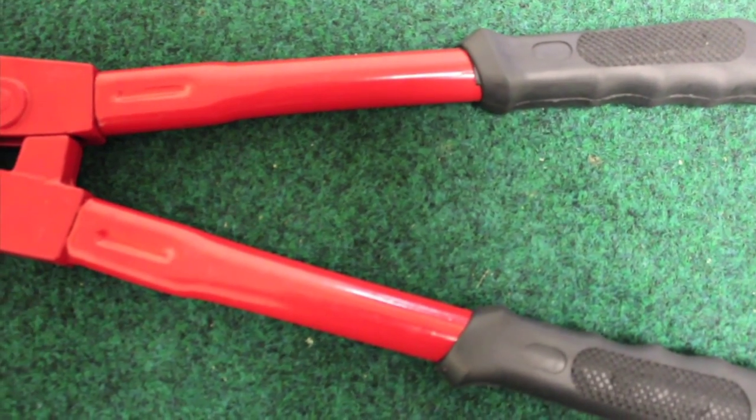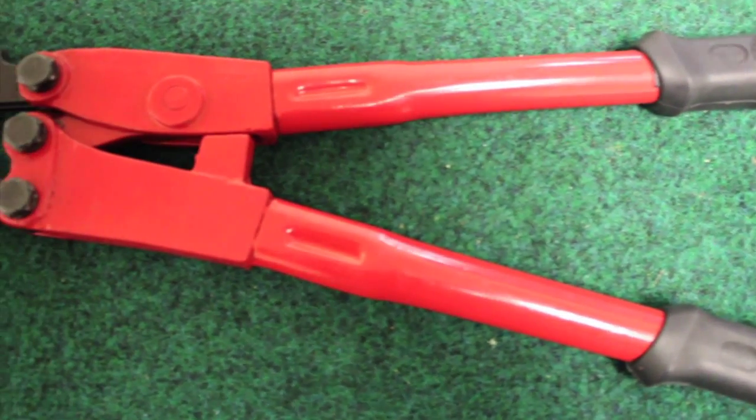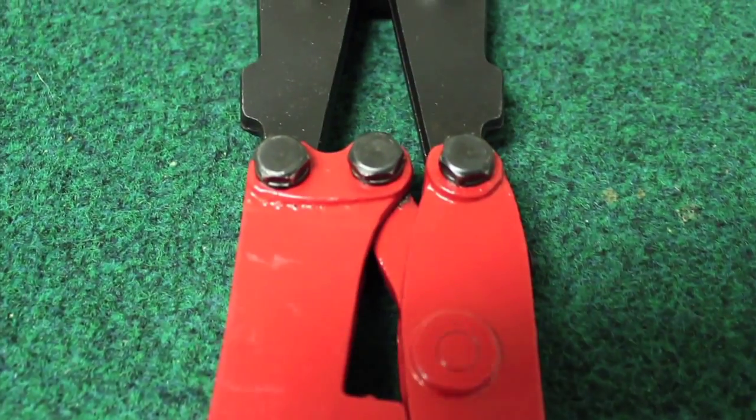The crimping tool is used to crimp the connection sleeves, holding the monofilament in place around the posts.